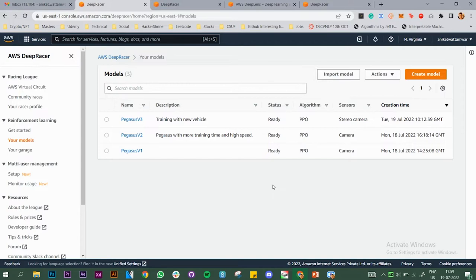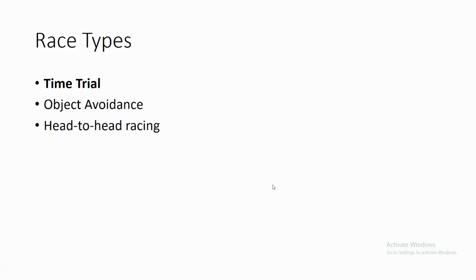In AWS DeepRacer we have three choices of races: time trial, object avoidance, and head-to-head racing. In time trial we need to complete the race within the minimum time. In object avoidance we need to avoid objects kept on the track. In head-to-head racing we need to compete with another vehicle. In this video we will look at time trial only.